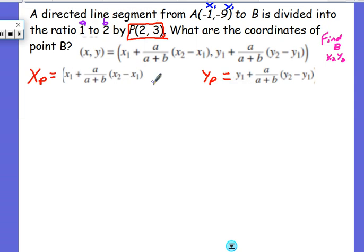Okay, we have another directed line segment here. We are looking for the other endpoint. It says what are the coordinate points of B, so I want to find B which would be x sub 2, y sub 2.